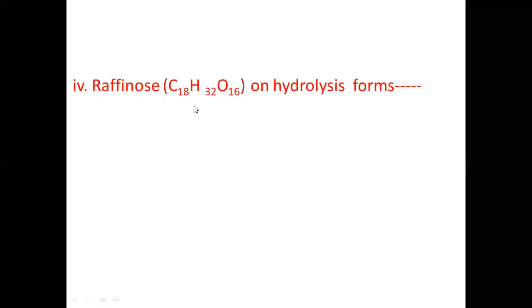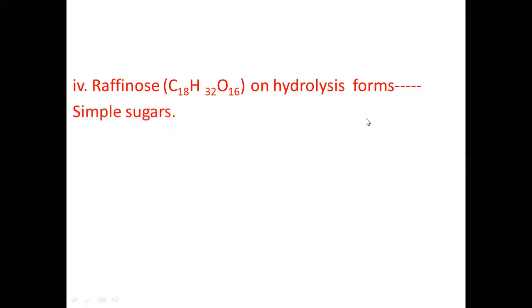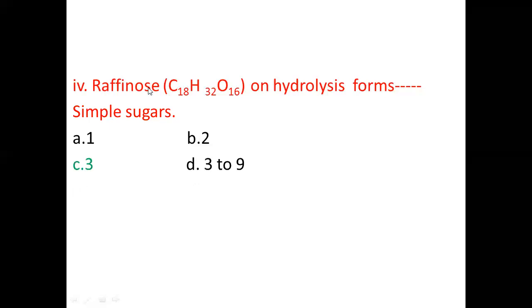Number four: raffinose contains 18 carbon atoms and upon hydrolysis it forms how many simple sugars? One sugar unit consists of six carbon atoms, so three sixes are 18. That means one raffinose can give three sugar units or three glucose units upon hydrolysis. So the correct answer is three sugar units.